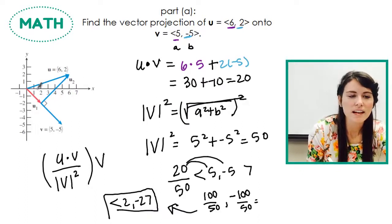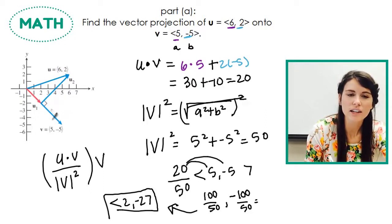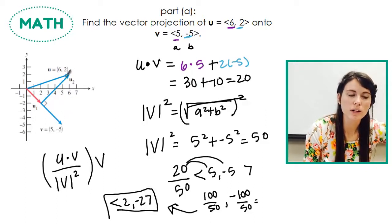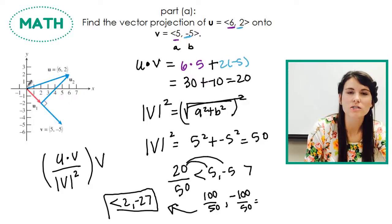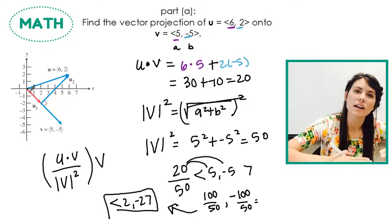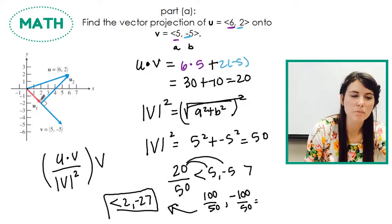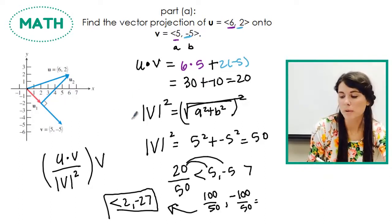What that means is I had this vector u here at 6, 2. And I had my vector v here at 5, negative 5. So if I take u and I project it onto my vector v, this red part represents the projection vector I just found. So I took that vector and I projected it on top of my vector v. So that's the first part, finding my projection vector.